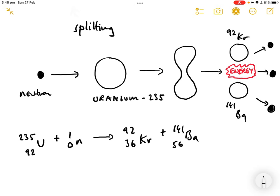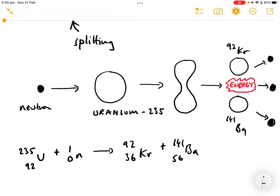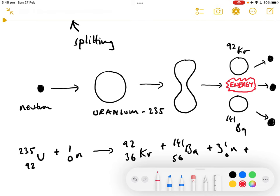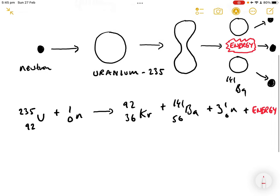These are the daughter nuclei, and the uranium-235 is called the parent nucleus. Let's not forget, we have three neutrons plus the all-important energy in the form of heat and gamma radiation.